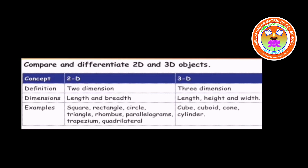3D objects are three-dimensional figures which have three dimensions: length, height, and width. Some examples of 3D objects are cube, cuboid, cone, and cylinder.